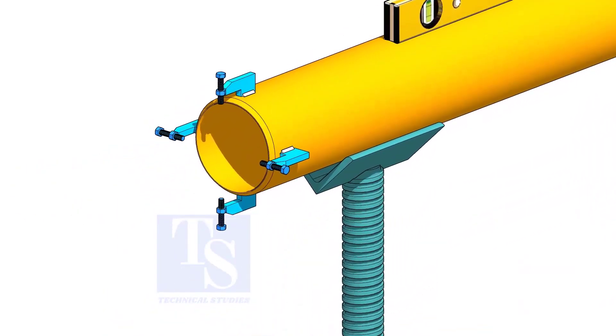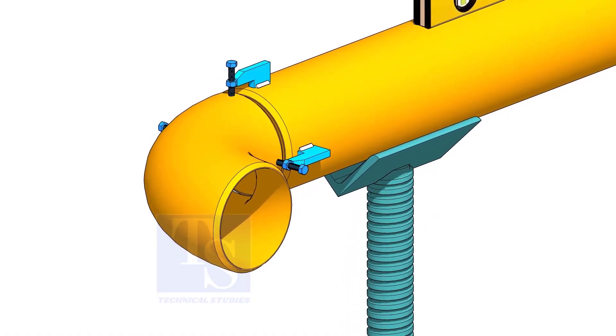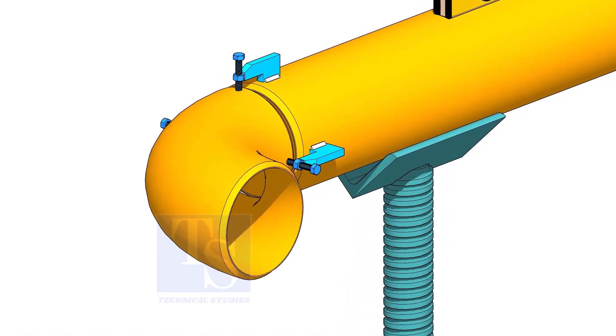Fix the clamps on the pipe. Put the elbow and the gap rod and slightly tighten the clamp bolts.